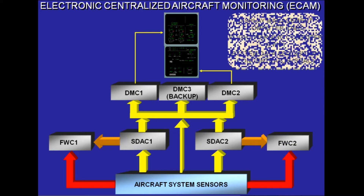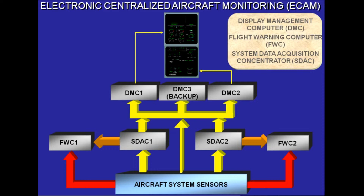For the ECAM displays, the system data acquisition concentrators, SDACs, receive data from the aircraft systems and send them to the display management computers, DMCs. The DMCs process the data and generate the images to be displayed. Under normal circumstances, DMC 1 supplies the upper ECAM display, DMC 2 supplies the lower ECAM display, and DMC 3 is available as a backup.